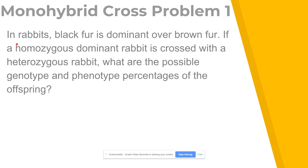There are some terms we need to understand before starting the problem. It says in rabbits, black fur is dominant over brown fur. Dominant is a term we need to understand. A dominant allele — remember, an allele is a version of a trait — in this case the trait is fur color. Black and brown are different versions of fur color. Dominant is going to be the allele that is expressed whenever that allele is present. So whenever the black fur allele is present in an organism's DNA, it's going to be expressed.